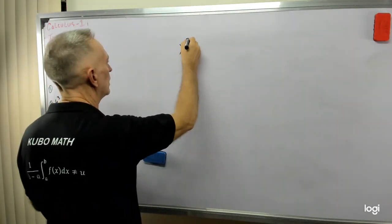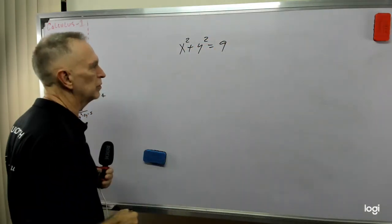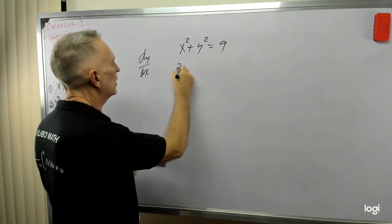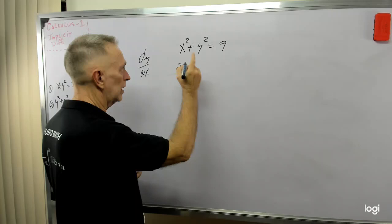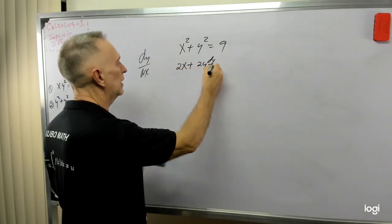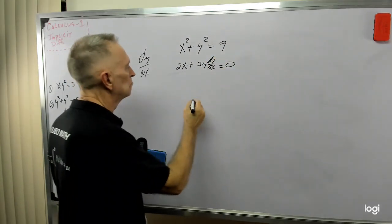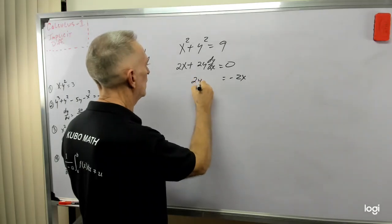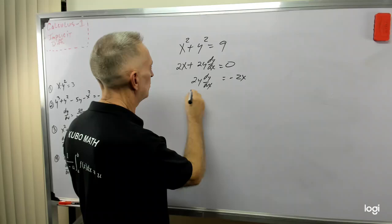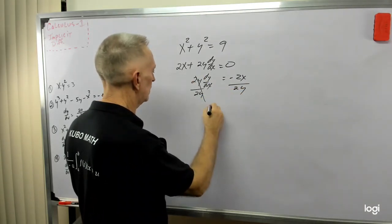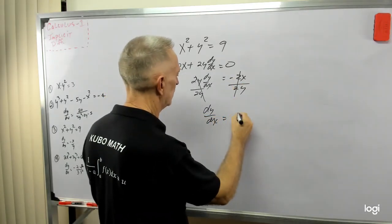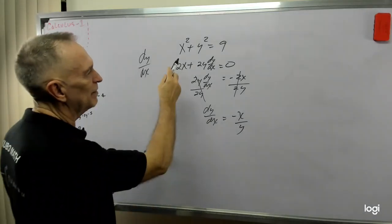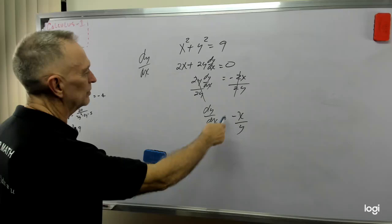Here's another one: x squared plus y squared equals 9. This is very similar to one we worked earlier. We're trying to find dy dx. Derivative of x squared is 2x, plus derivative of y squared with respect to x is 2y dy dx, equals 0. Subtract 2x from each side, divide both sides by 2y: dy dx equals minus x over y. Same form as x squared plus y squared equals 64 — same answer.